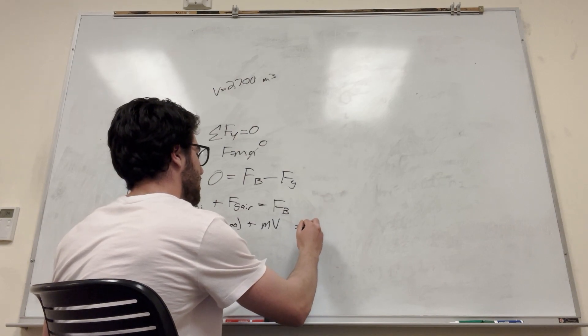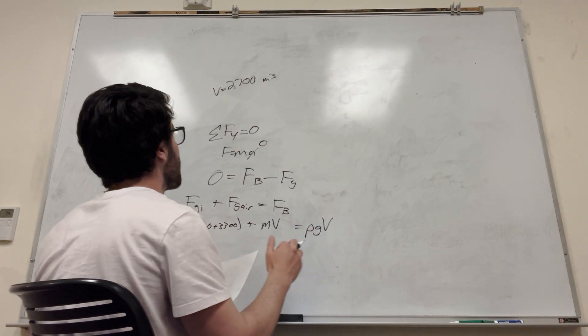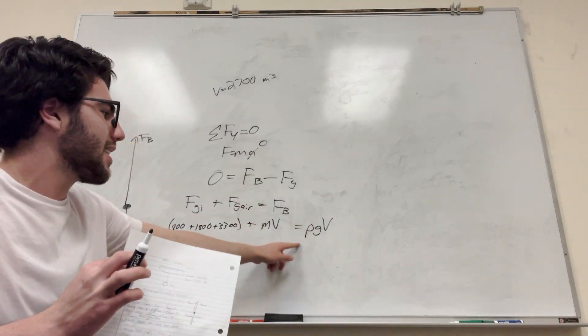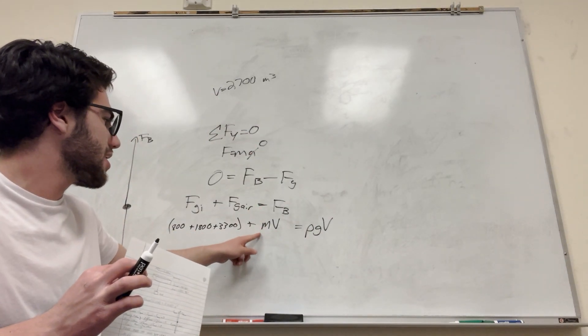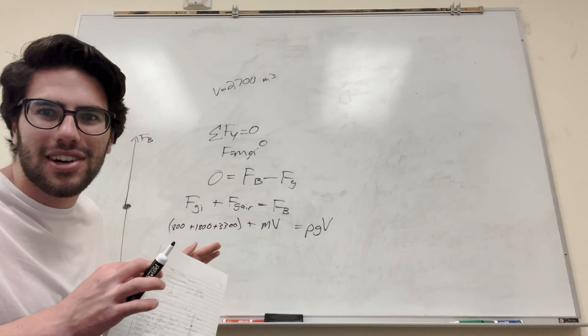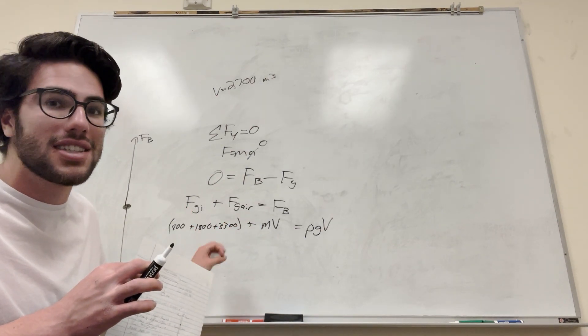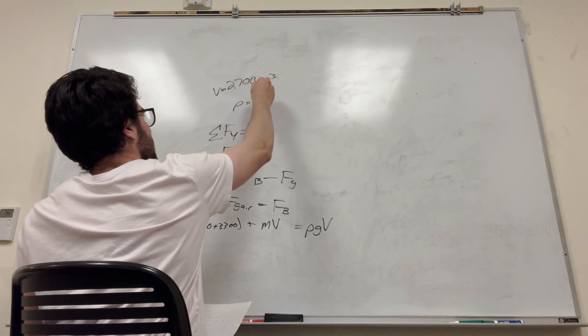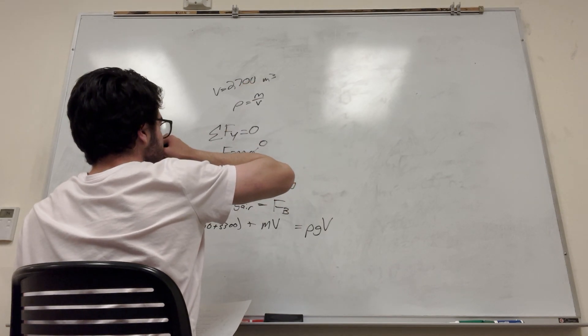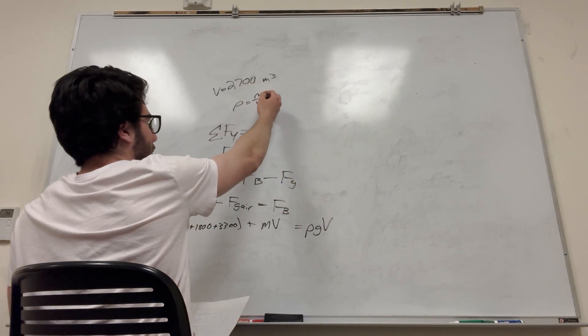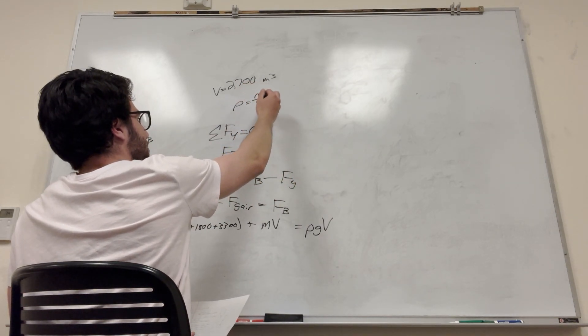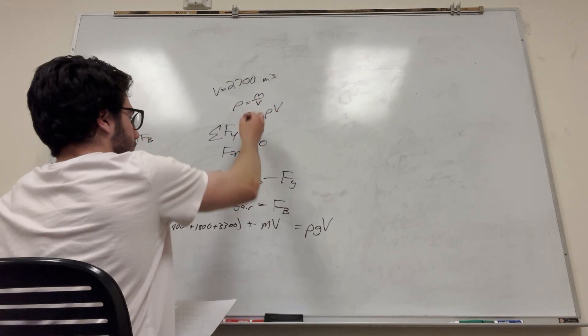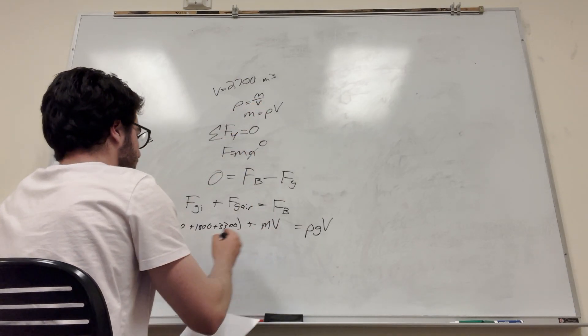So the buoyancy, force of buoyancy is density times gravity times volume. So we have volume, and we have the density of the air outside. So all we have here is this mass unknown. And we don't want mass, we're trying to find the density of the air inside. So what we can say is we know that density is equal to mass divided by volume. So we can move this over, and it'll be mass is equal to density times volume.